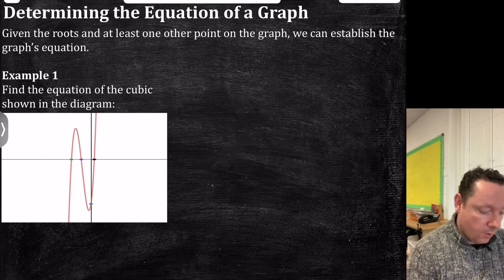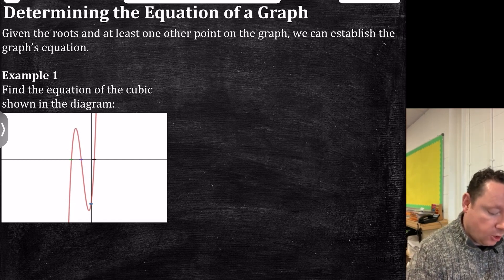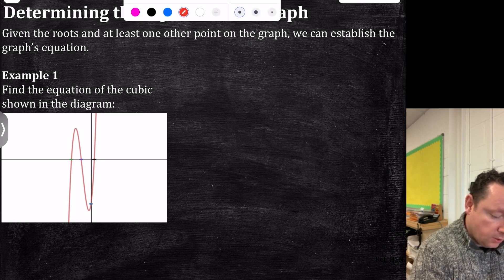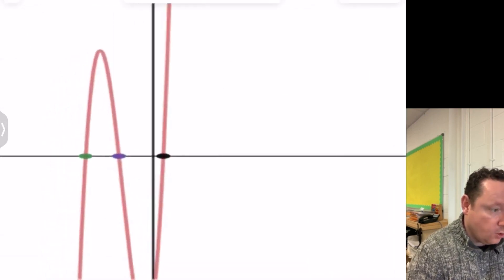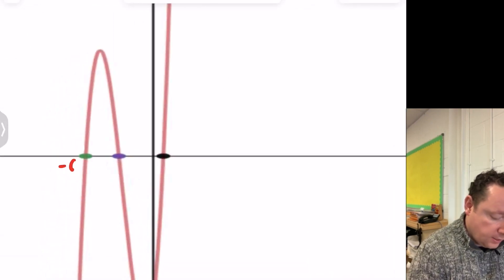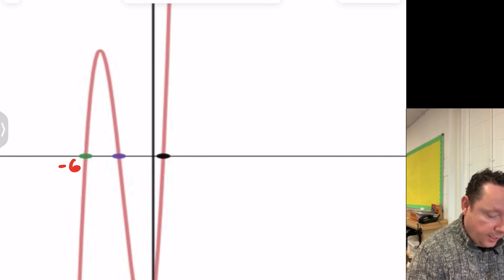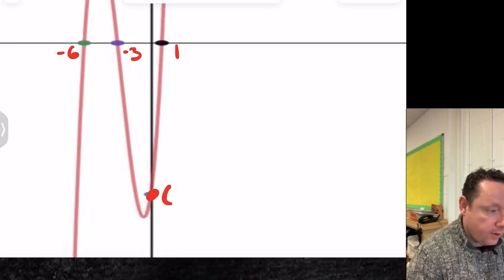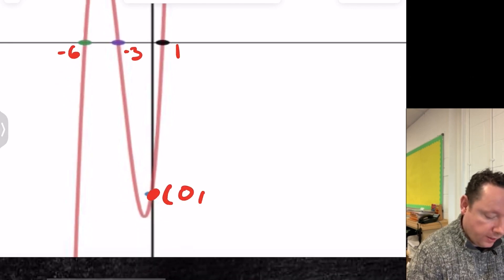Here's a simple example. Find the equation of the cubic shown in the diagram, and I'm going to give you the points that they give us in this question. Let me just note these on. They tell us that this is minus 6, that this is minus 3, that this is 1. They also give us one point way down here, and they define that point as 0 minus 36, which we're going to need in a minute.